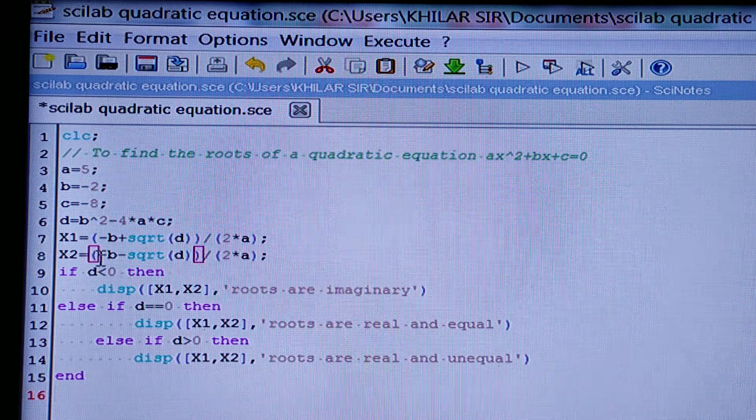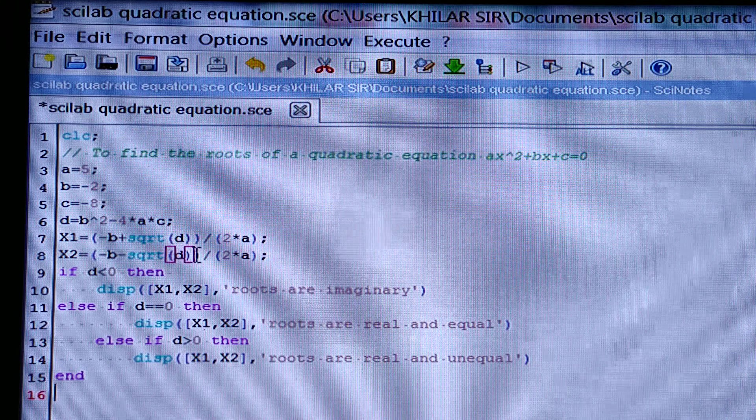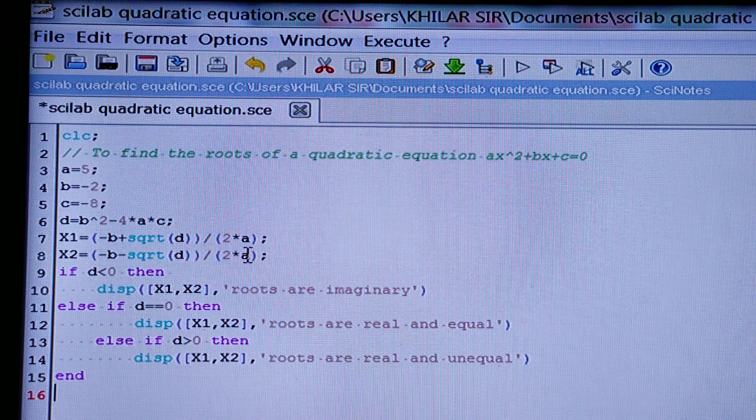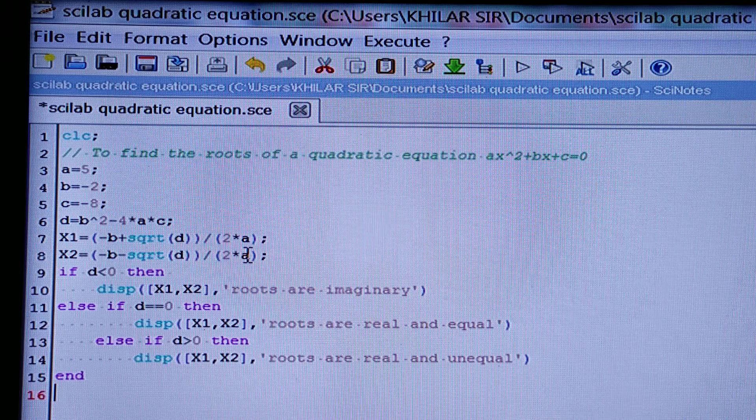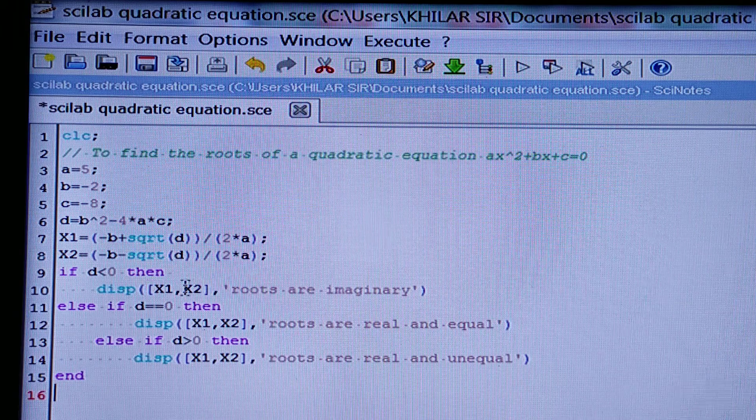Then similarly for X2, you should write minus B minus square root of D within the brackets, then slash 2 star A. That means minus B plus minus root of B square minus 4C divided by 2A, there will be two roots, X1 and X2.